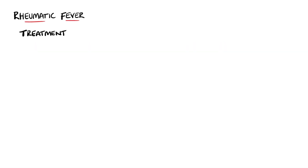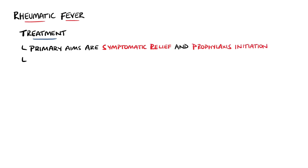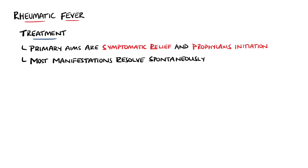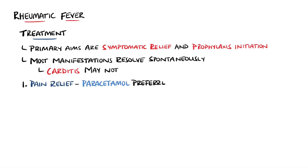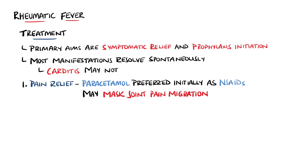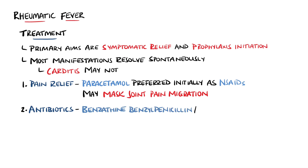In the acute setting, the overall aim of treatment is to provide symptomatic relief and to begin appropriate secondary prophylaxis, as most manifestations will resolve spontaneously — the main outlier being carditis. Pain relief such as paracetamol is preferred to opioids. However, joint pain in rheumatic fever is very sensitive to NSAIDs; therefore, if there is a suspicion of rheumatic fever, NSAIDs should be avoided as they may mask the migration of the pain, which would then be a major criterion. Antibiotics are recommended in confirmed cases, typically an injection of benzathine benzylpenicillin, or oral erythromycin in patients allergic to penicillin.